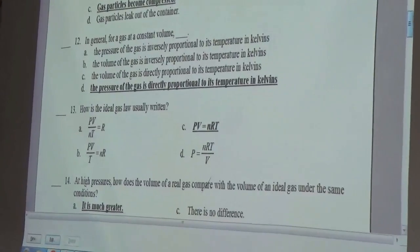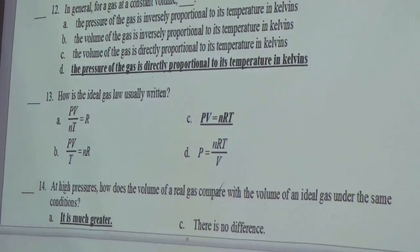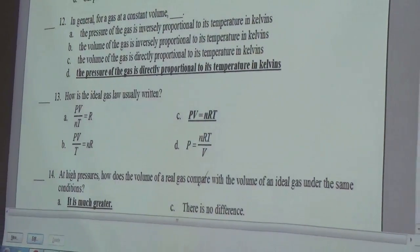How is the ideal gas law usually written? C, PV equals nRT.